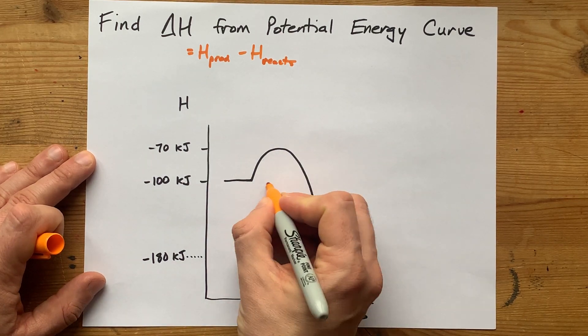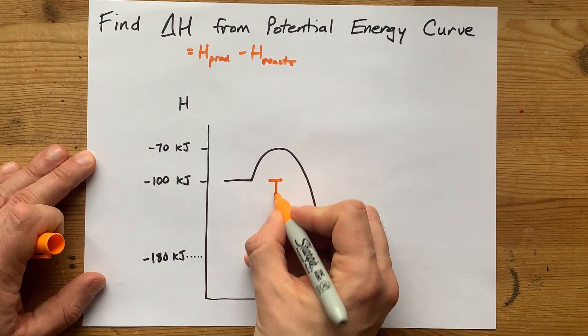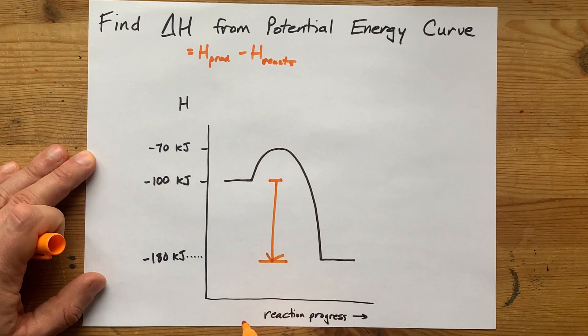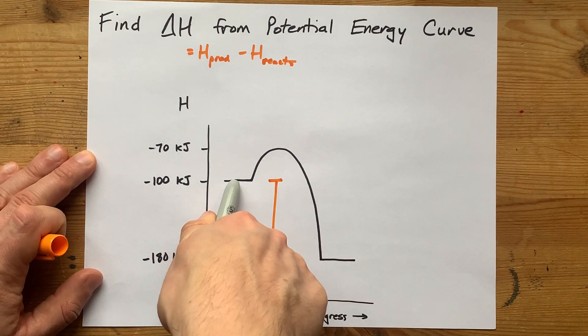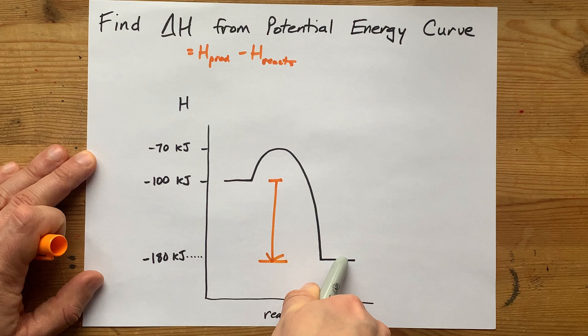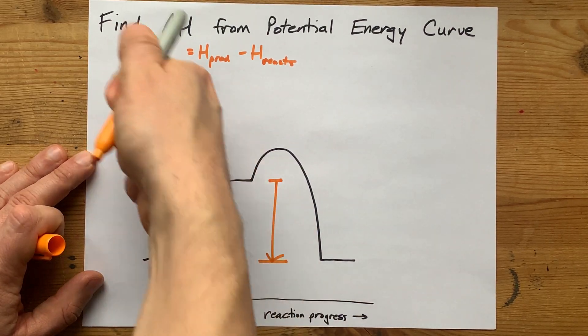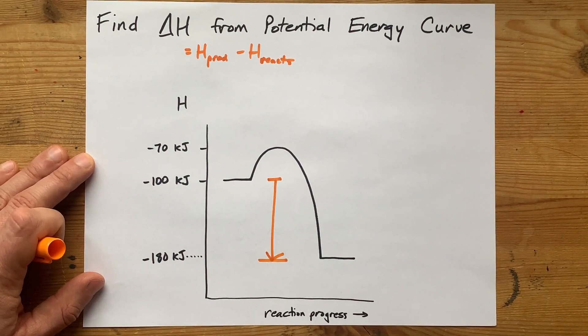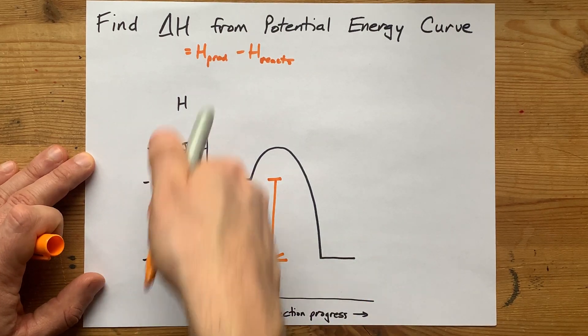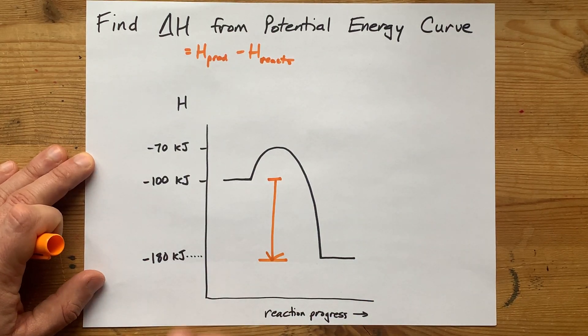Enthalpy is actually just the difference between reactants and products. So wherever you started with and wherever you ended with, however tall that is, is going to be the number that corresponds to enthalpy. If you're given actual numbers though, you can plug them into this formula.